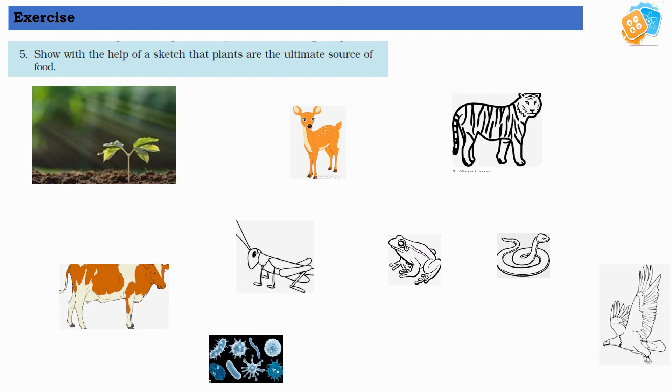Welcome students. Question number five: show with the help of a sketch that plants are the ultimate source of food. In this question, either you can stick the pictures or you can draw. First will be the plant because they are autotrophs.